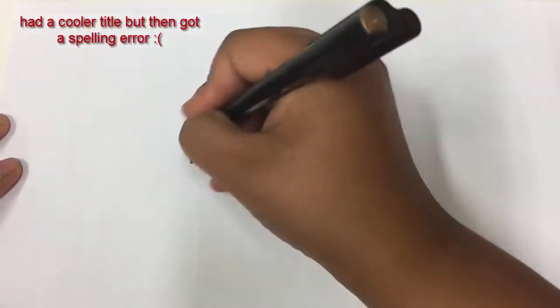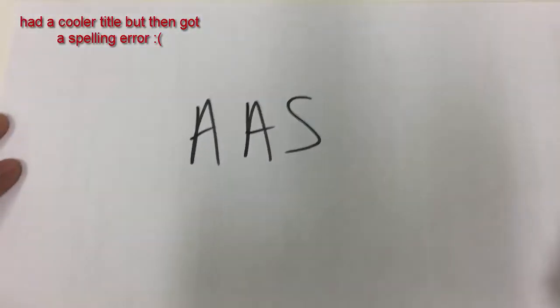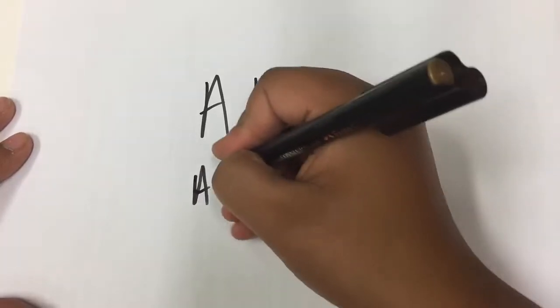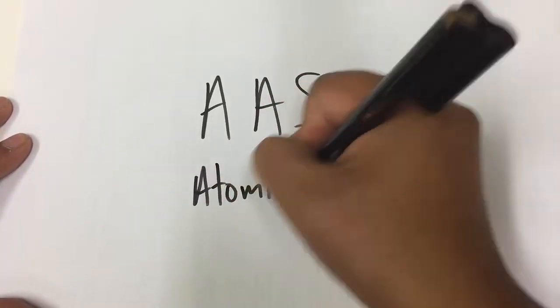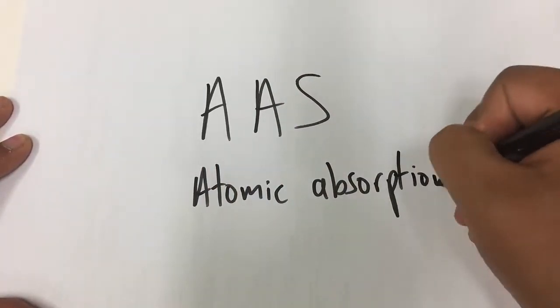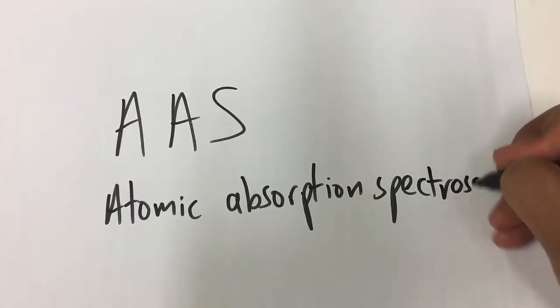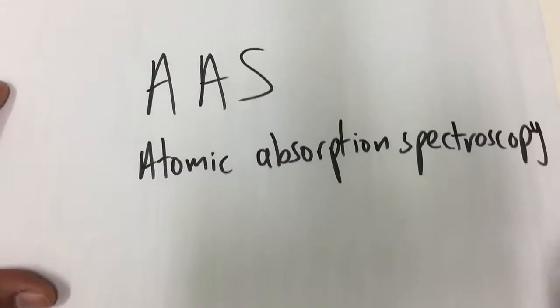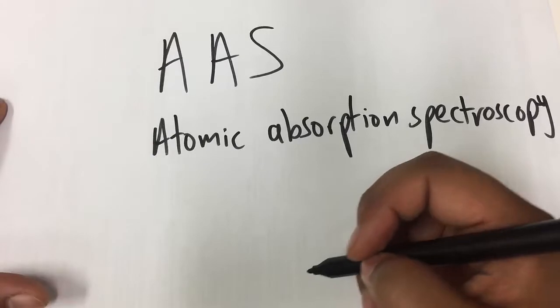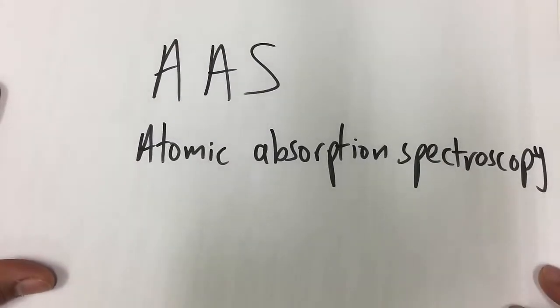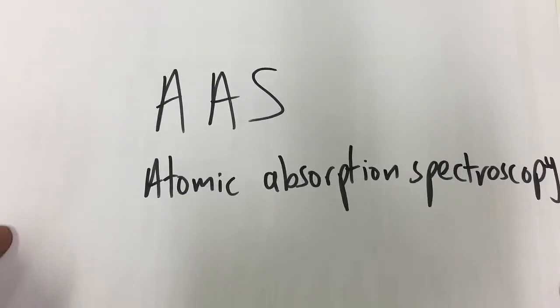So welcome back. In today's video we're going to be looking at AAS which stands for Atomic Absorption Spectroscopy. It's another one of our analytical techniques and so we're going to explain how it works and then go through some example questions.